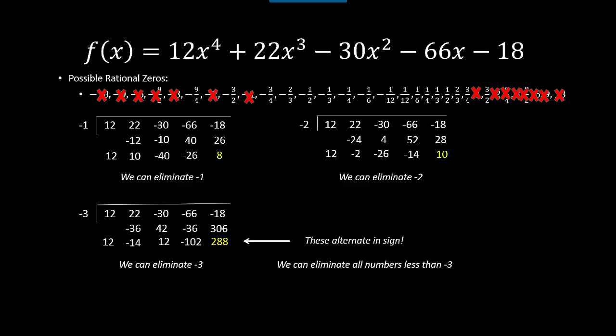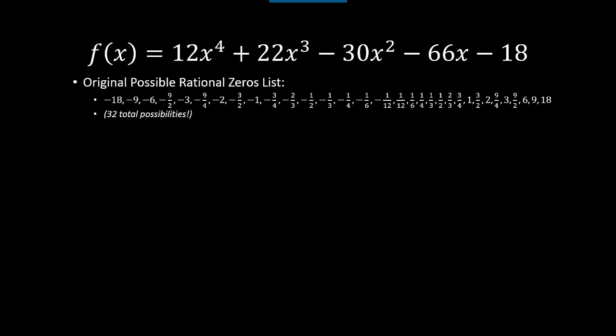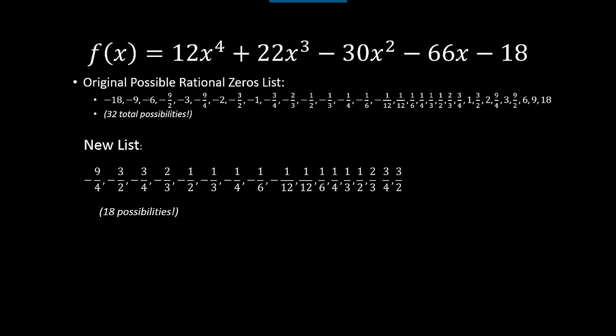Altogether I've done synthetic division five times and eliminated 14 zeros off my list. I started with 32 and now I have 18 — essentially the same result as looking at the graph, achieved purely through the theorem on bounds.